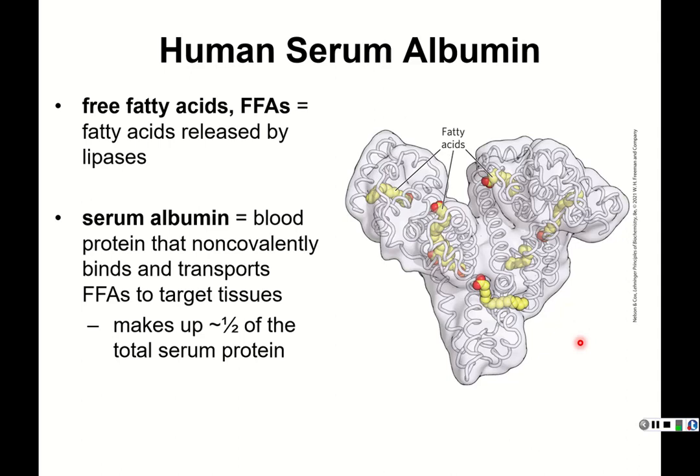Fatty acids themselves are poorly soluble, so they wouldn't move efficiently through the bloodstream in a mostly aqueous environment. Proteins like human serum albumin carry them — the fatty acids bind non-covalently to this protein and are shuttled around the bloodstream. Human serum albumin makes up about half of the total serum protein in your bloodstream.